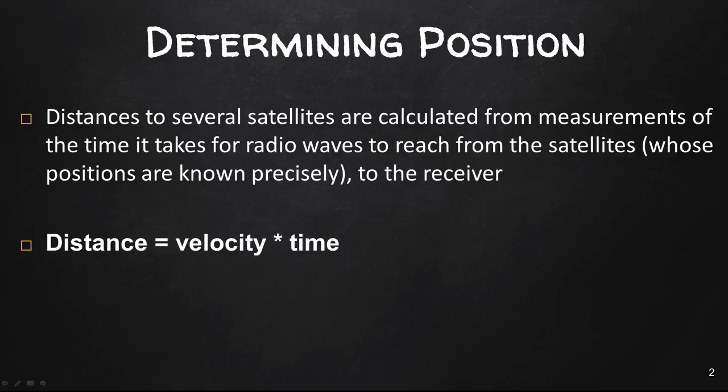Distance to several satellites are calculated from measurements of the time it takes for radio waves to reach from the satellite whose positions are precisely known to the receiver that's being held by you or in your car. Distance equals velocity times time, and velocity is the speed of light, which is 186,000 miles per second, and time is measured in seconds.